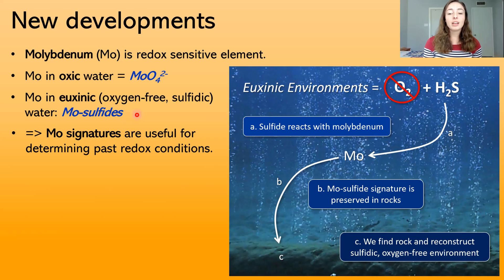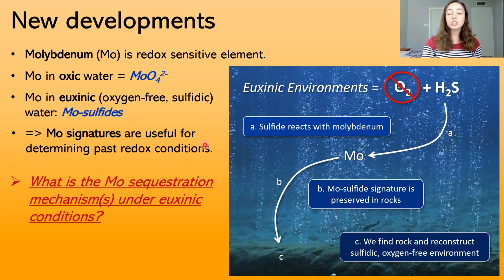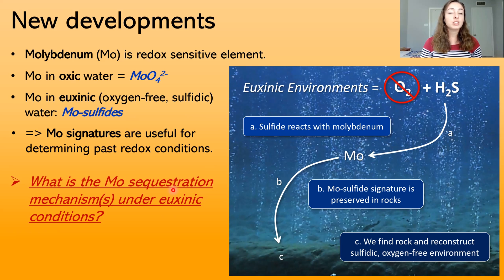This is still somewhat up in the air and is the reason we need to do more research. But if we can constrain the species or chemical composition of the molybdenum sulfide that becomes sequestered in euxinic environments, molybdenum signatures could be useful for determining past redox conditions. To understand what the molybdenum solid composition is when sequestered, we need to better understand the mechanism causing molybdenum sequestration under euxinic conditions — which is currently not fully known, and this is the goal of my research.